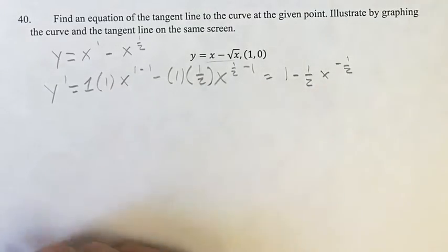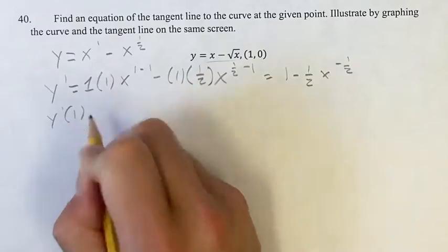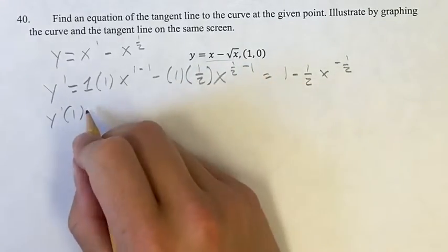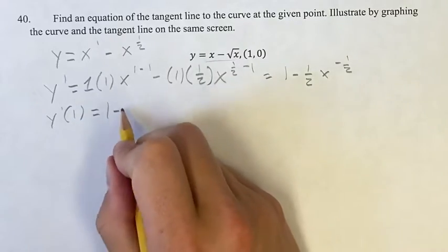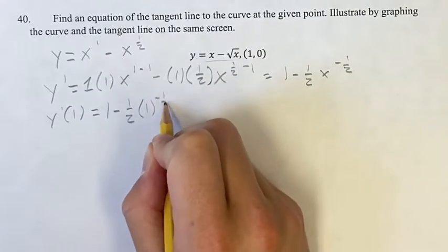This is your general derivative. We want to find it at this point, where x equals 1. So you plug in 1 for x. Wherever we see x, we put in a 1. So you have 1 minus 1 half, 1 to the negative 1 half.